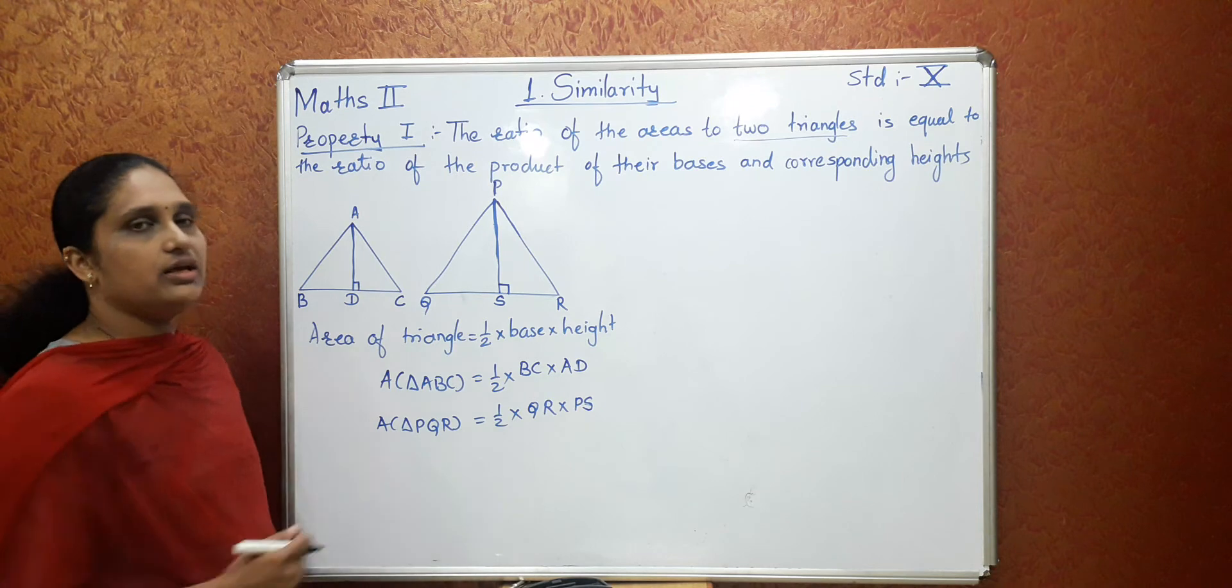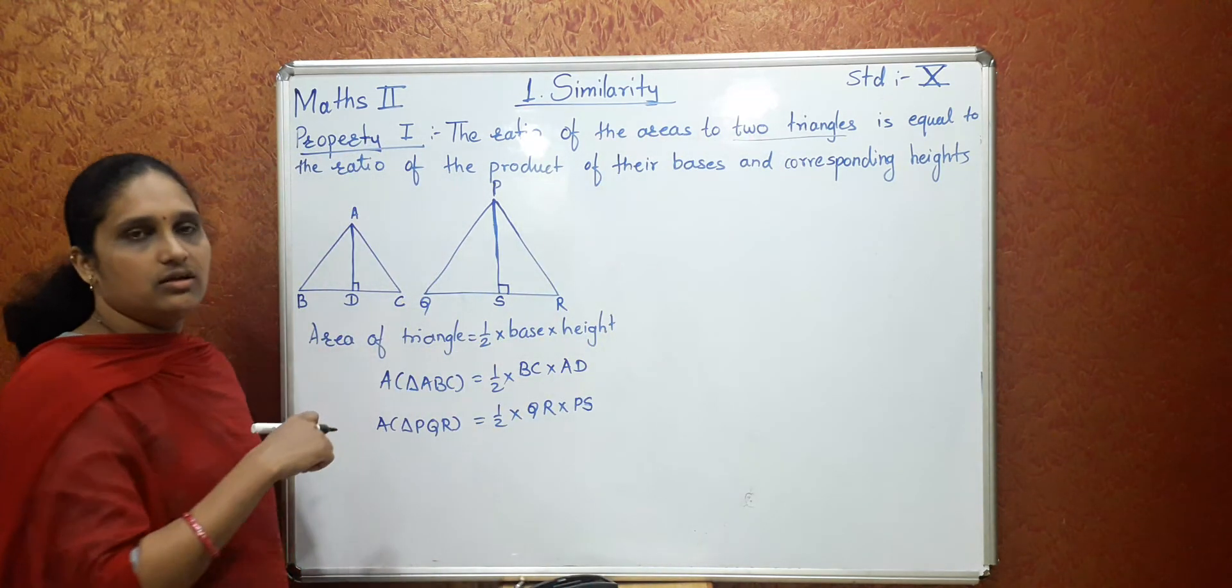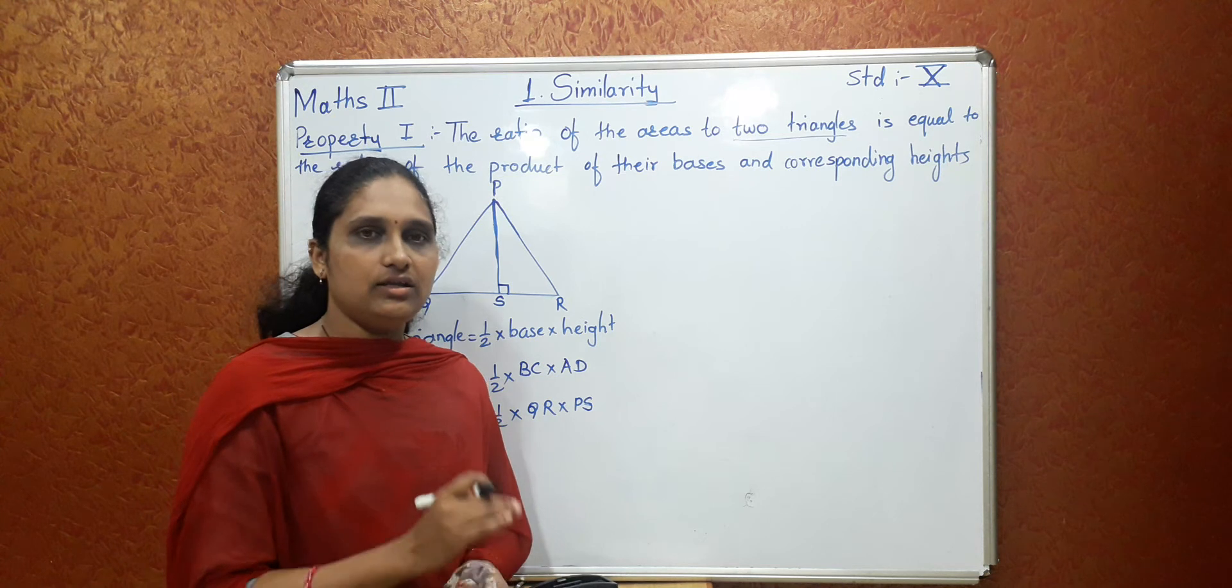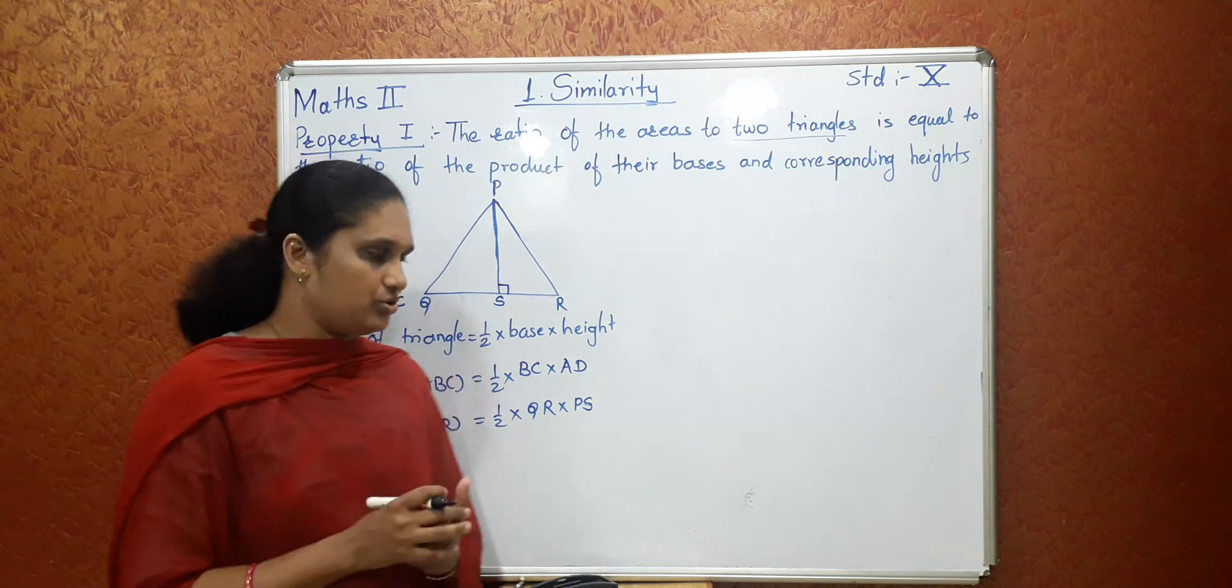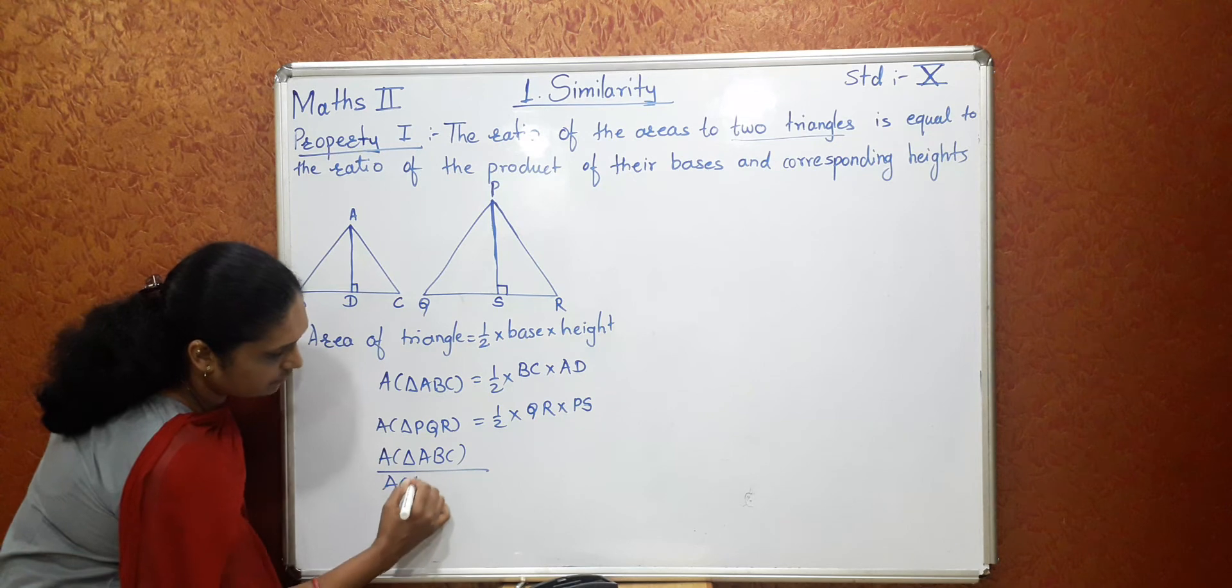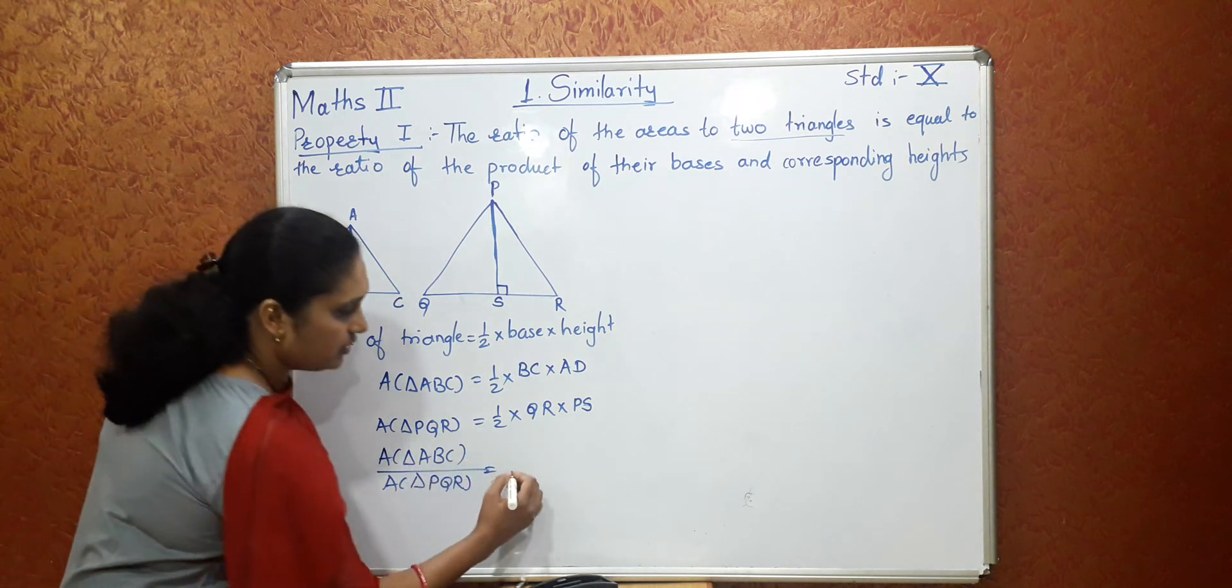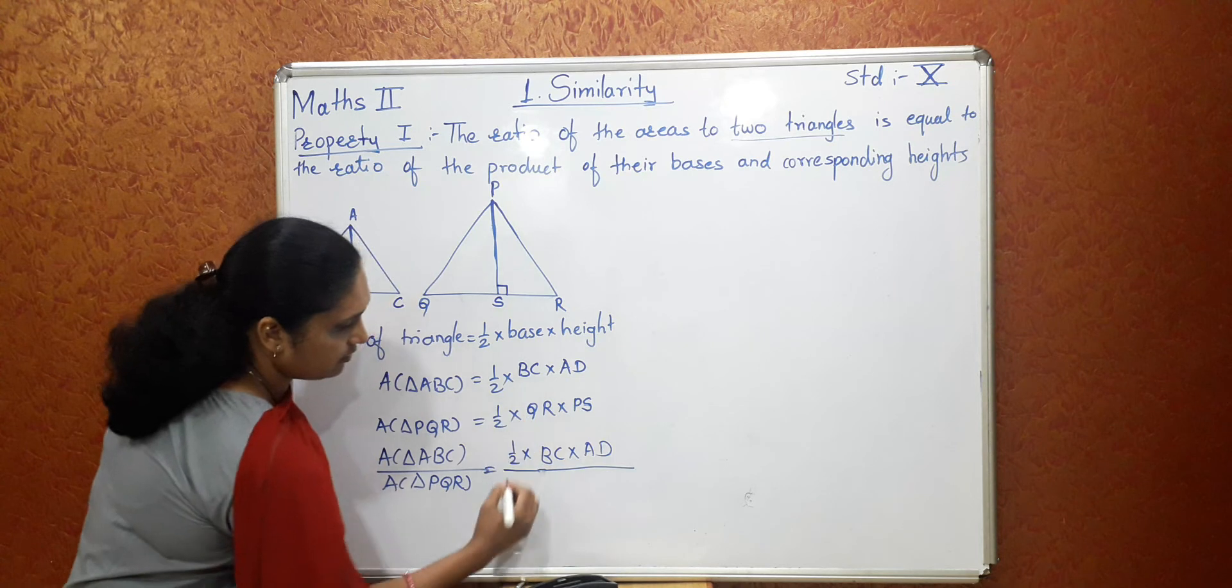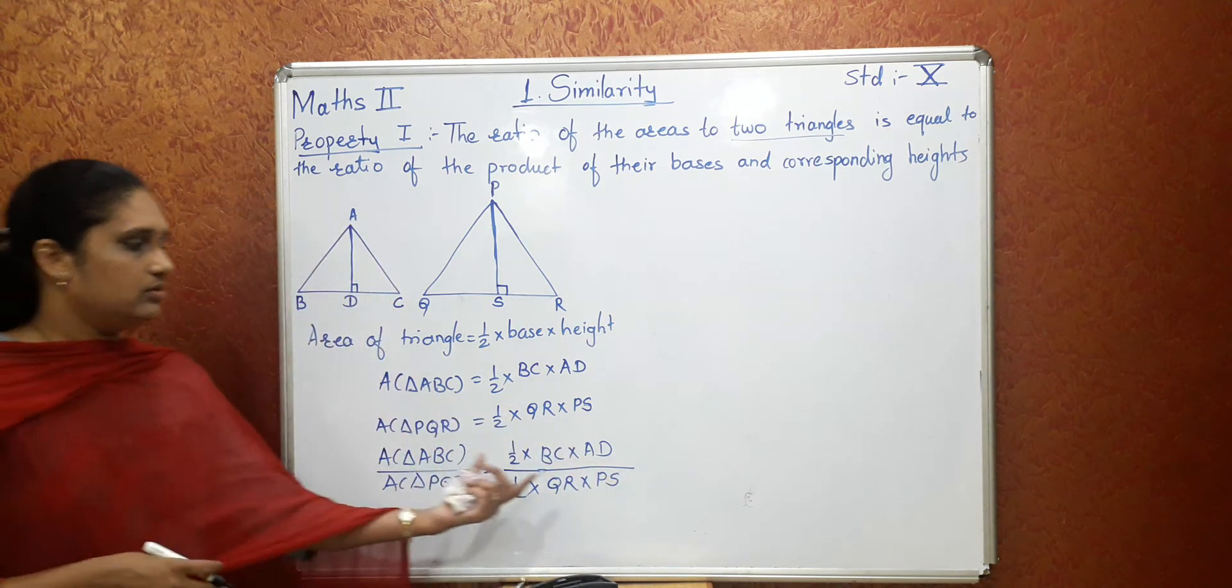So once we got this, after that we will read again the statement that we need ratio of the areas of these two triangles. Now in previous year, we have studied ratio proportion lesson. So accordingly we will find the ratio. Ratio means numerator upon denominator. So we will arrange these two areas in the form of ratio. So I will write area of triangle ABC upon area of triangle PQR equal to half into BC into AD upon half into QR into PS. So this is again a ratio.